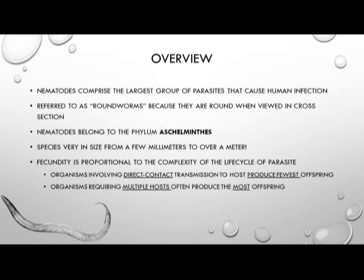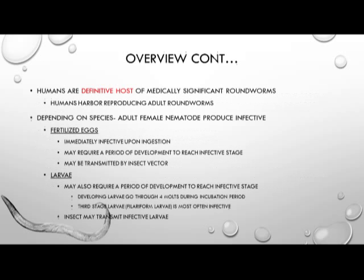Nematodes comprise the largest group of parasites that cause human infection, and they are referred to as roundworms because they are round when viewed in cross-section. Nematodes belong to the phylum Aschelminthes, and the fecundity of the parasite is proportional to the complexity of their life cycle — species involving direct contact transmission produce fewer offspring, whereas species requiring multiple hosts often produce more offspring.